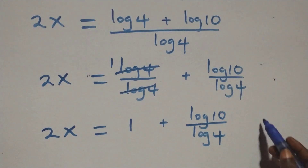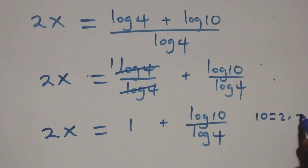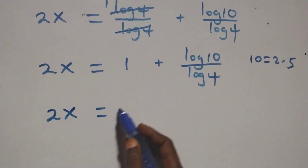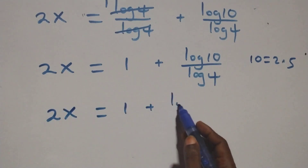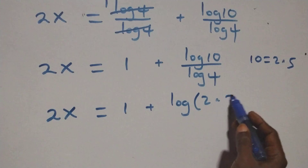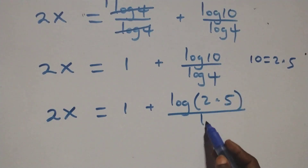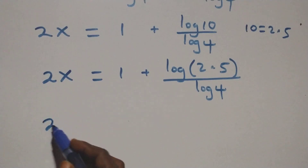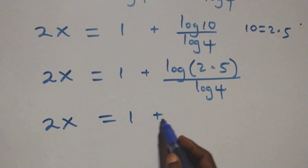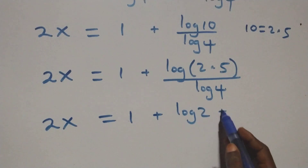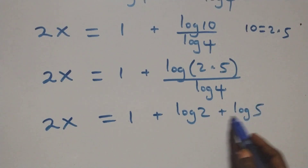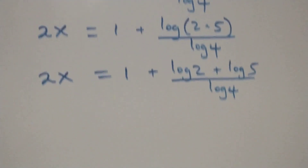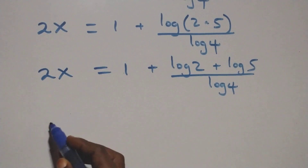Also, 10 can be expressed as 2 times 5. So what we have becomes 2x equals 1 plus log(2 times 5) over log 4. Applying the law of logarithm, 2x equals 1 plus (log 2 plus log 5) over log 4.